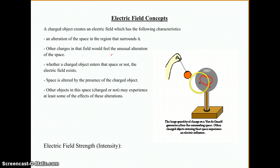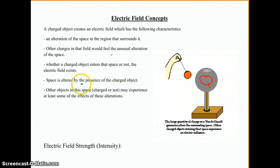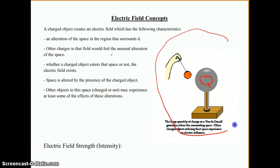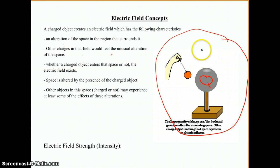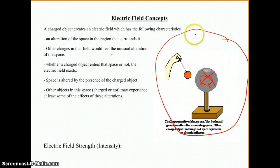Whether the tree falls in the forest because somebody's not there is not the case here — it's definitely going to be there whether there are things around or not. The space is altered by the presence of that charged object. All the way around the Van de Graaff, there's going to be some kind of alteration from what it would have been had there been no charge. Before you turn the Van de Graaff on, if it's neutral, this space would not be altered in any way — it would just be normal space.